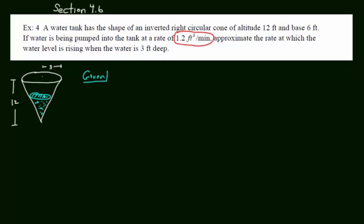Number one: What is given in the problem? The volume of the water is increasing at a rate of 1.2 feet cubed per minute, so dV/dt equals positive 1.2 feet cubed per minute. Next, we want to find the rate of change in the height of the water with respect to time, or dh/dt, when h equals 3 feet.